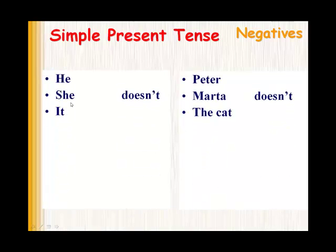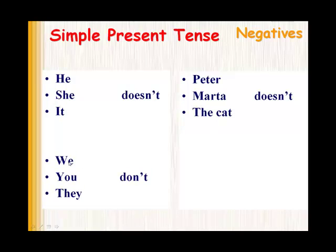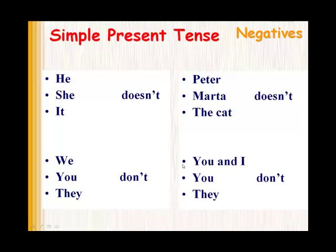It's very important to remember that he, she, and it take doesn't. You may not find he, she, or it in a sentence, but you may find other words which could be replaced by them. For example, Peter is the same as he, Marta is the same as she, and the cat is the same as it. The same is true of other pronouns — we would be the same as you and I. Remember that these take don't for negatives.